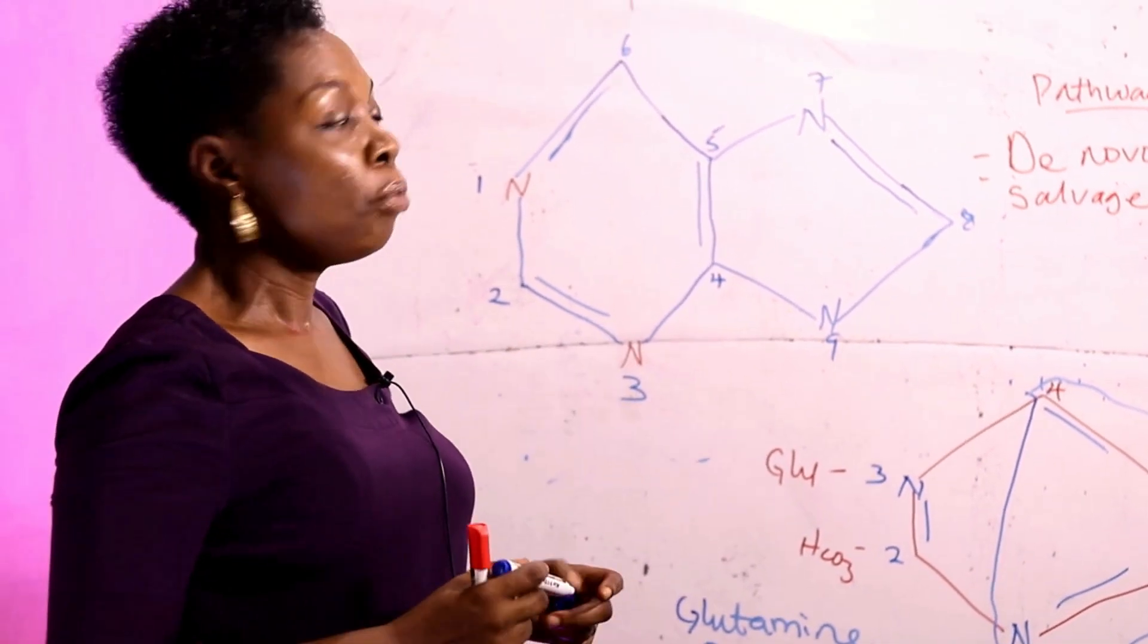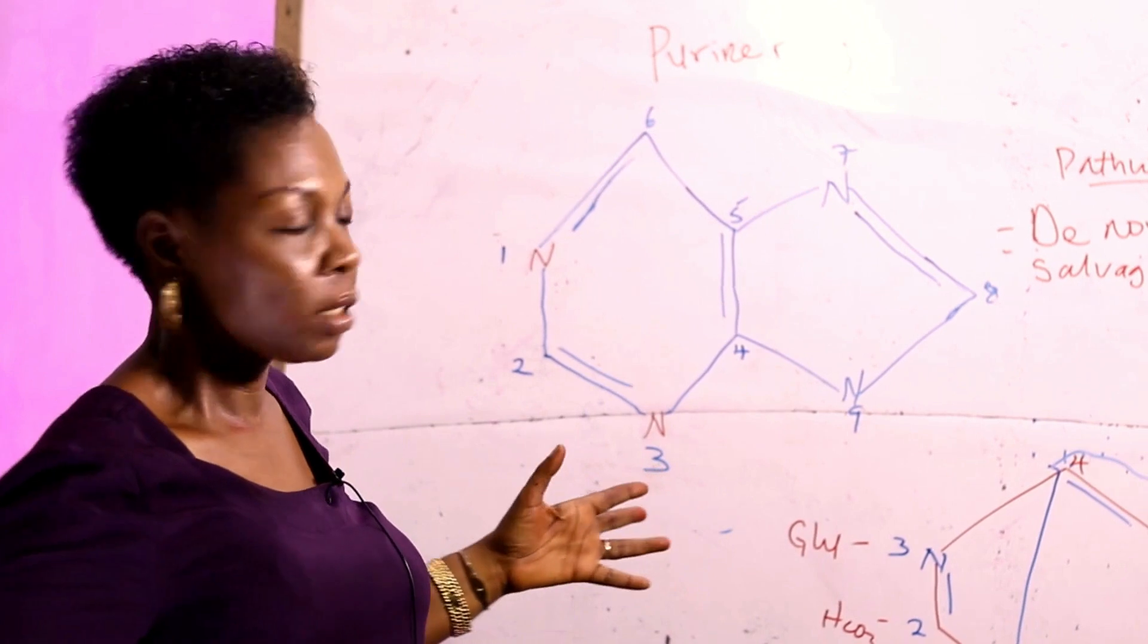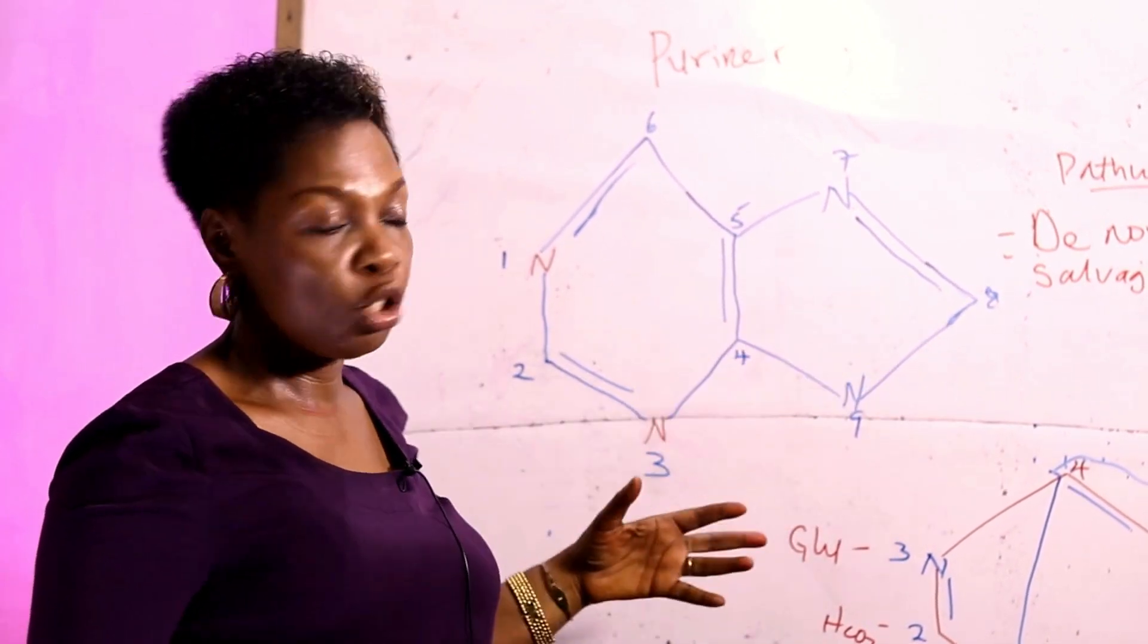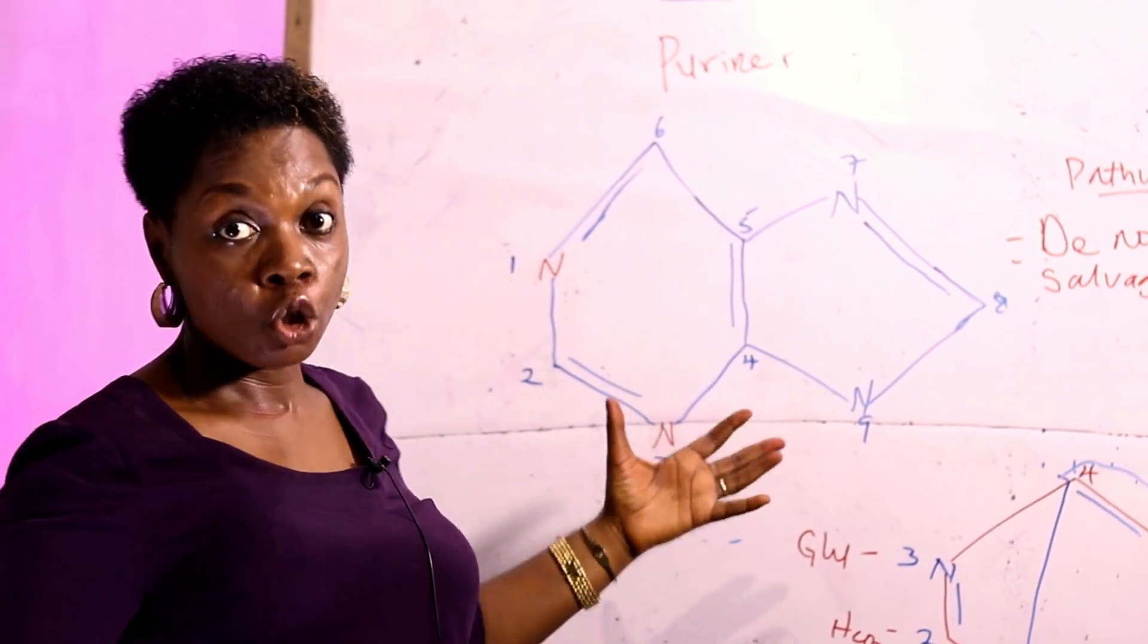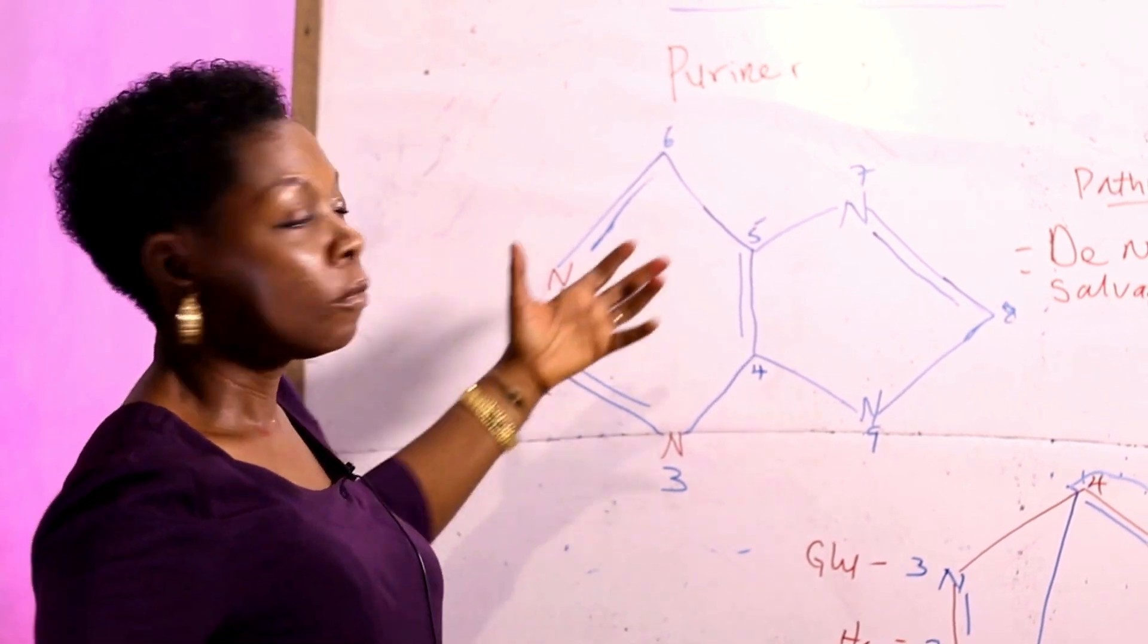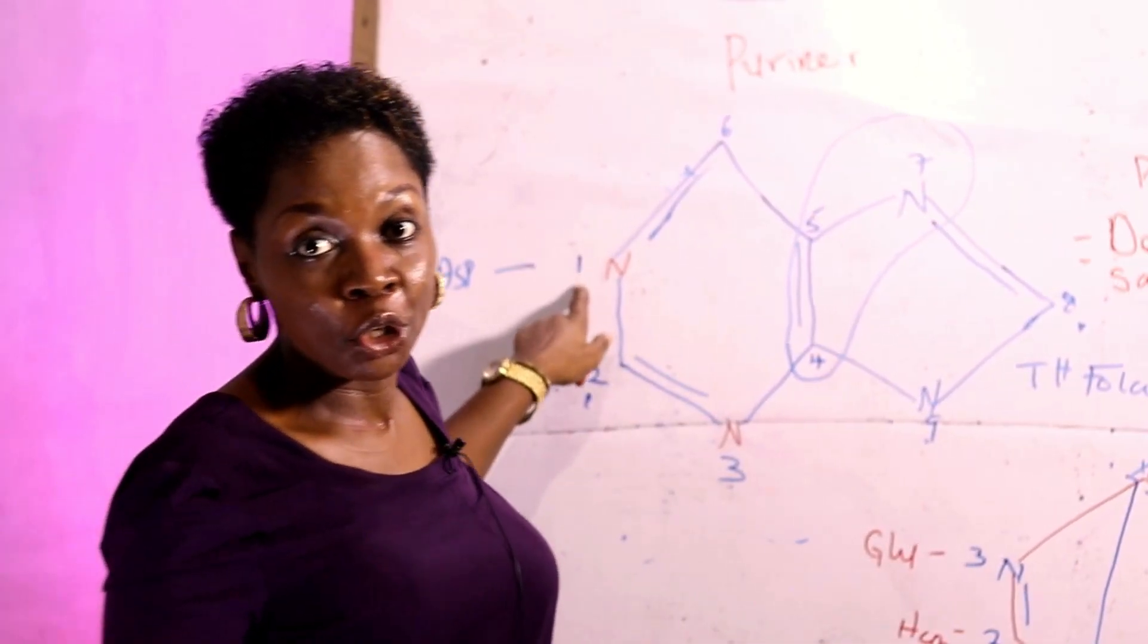Let's go to the purine ring. Remember we said the purine ring is more complex and it's made up of a nine-membered ring structure. Let's look at the sources of carbon and nitrogen from the purine ring. Beginning with position 1,